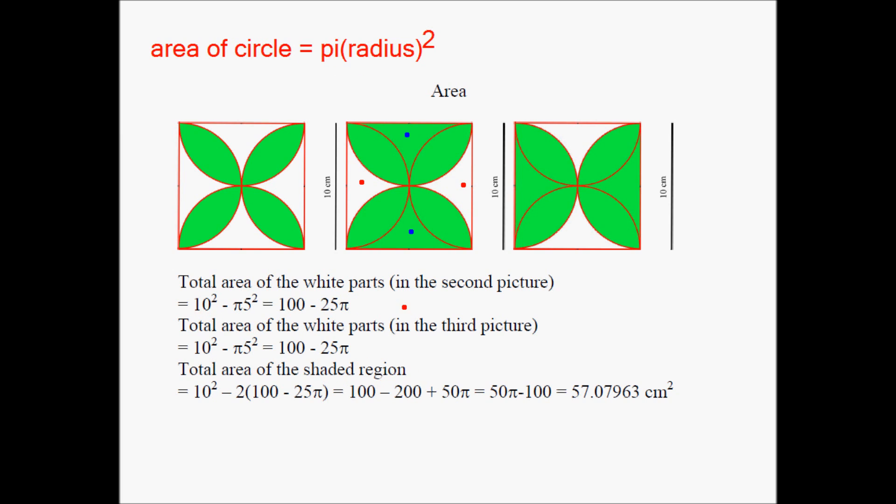Now, to find the area of the two white pieces marked by two red dots, I'm going to use the second picture. 10 squared is the area of the whole square. And pi r squared, r is 5, if this length is 10, the radius of the semicircle has to be 5. So pi 5 squared is the area of the sum of the two semicircles, or area of one circle. And if you do your mathematics correctly, 10 squared is 100, 5 squared is 25 pi. So, 100 minus 25 pi is the area of the two white pieces marked by two red dots.